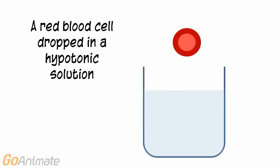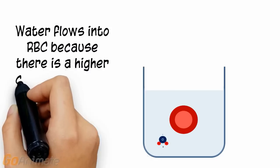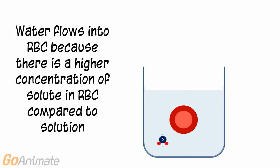In this experiment, a red blood cell is dropped into a hypotonic solution. Water will flow into the red blood cell because the cell contains a higher solute concentration. The cell will swell and burst.